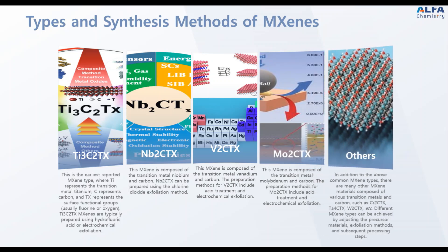In addition to the above common MXene types, there are many other MXene materials composed of various transition metals and carbon, such as Cr2CTx, Ta4CTx, W2CTx, etc. Different MXene types can be achieved by adjusting the precursor materials, exfoliation methods, and subsequent processing steps.